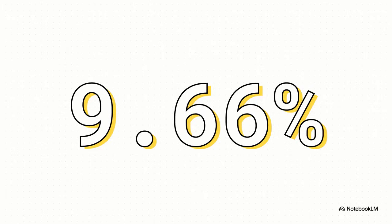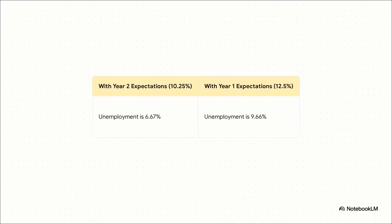And the result? It's kind of shocking. Instead of that nice 6.67% unemployment, the rate would have been a painful 9.66%. That's a huge difference. Think about that. You get the exact same amount of inflation, but the economy takes a much bigger hit with way more people out of work. And it's all because of what we expected to happen.